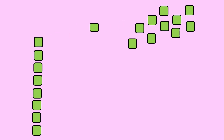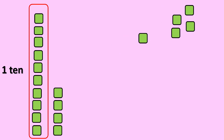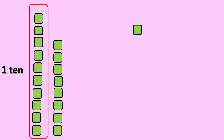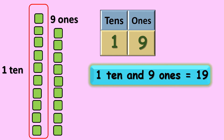Shall we start arranging the blocks to find our next number? 1 2 3 4 5 6 7 8 9 10. So 10 ones gives you 1 ten. And the remaining: 1 2 3 4 5 6 7 8 9 — there are 9 ones. So 1 ten and 9 ones gives you 19.